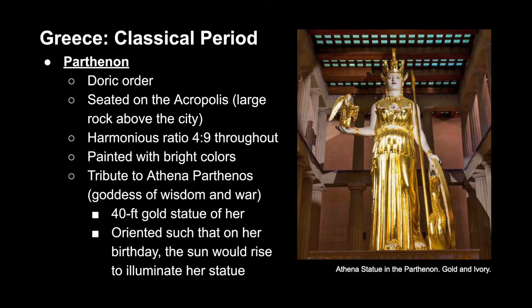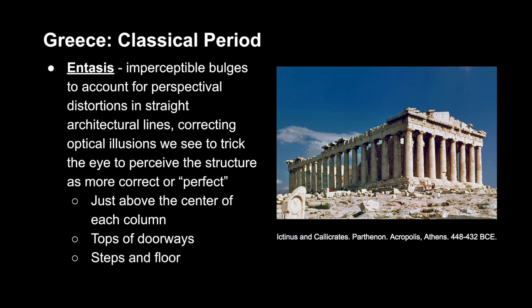The Parthenon is a great example of the Doric order, seated on the Acropolis — a large rock formation above the city. Throughout different components of the building is the harmonious ratio of 4 to 9, which is a reflection of the Greek love of logic, order, and proportions. The building was actually painted in really bright colors — it's not just white as we see it today. It was constructed as a tribute to Athena Parthenos, the goddess of wisdom and war. To honor Athena, the Greeks constructed a 40-foot golden statue of her, and the building was oriented so that on her birthday, the sun would rise and illuminate the statue.